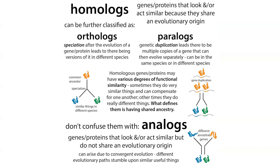To recap: homology refers to things that share a common evolutionary ancestry. If two things are similar because their species split off after the gene or protein evolved — a speciation event — we call these orthologues. If they arise from a genetic duplication event, we call these paralogues. Don't confuse these with analogues, which are things that look or act similar but come from different genetic sources, arising through convergent evolution.